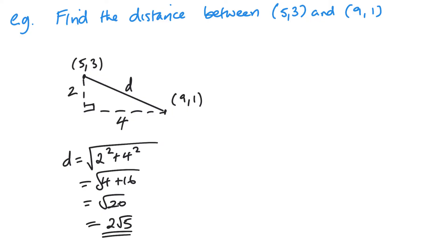So that's doing it visually, or I can just jump straight in with my formula. Remember this is x2 minus x1 squared plus y2 minus y1 squared. And if I think of this being my coordinate 1 and this one being my coordinate 2.